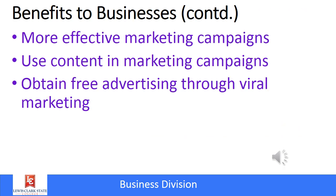There are even more benefits to business, including more effective marketing campaigns. They're able to target exactly who they're looking for using demographics that Facebook or Google provide. They can use low-cost user-generated content, and they can also hope to obtain free advertising through viral marketing. One of the best examples of that was an Old Spice ad that everybody shared, and the company was able to get way more traction out of the ad than if they had just simply placed it on TV.